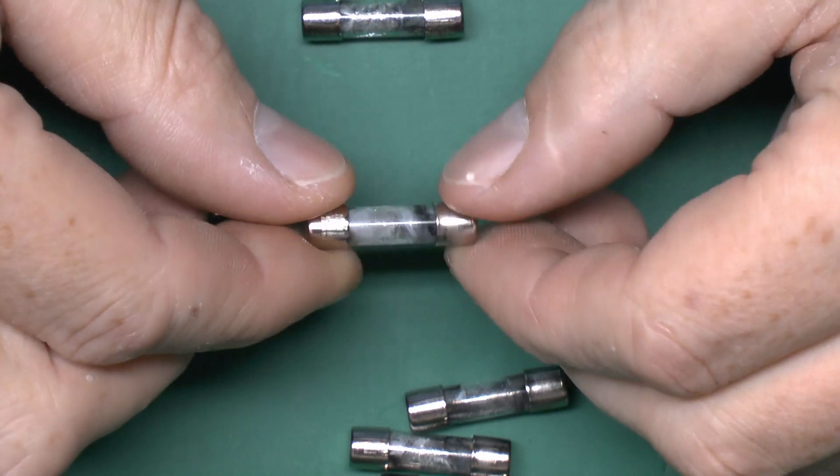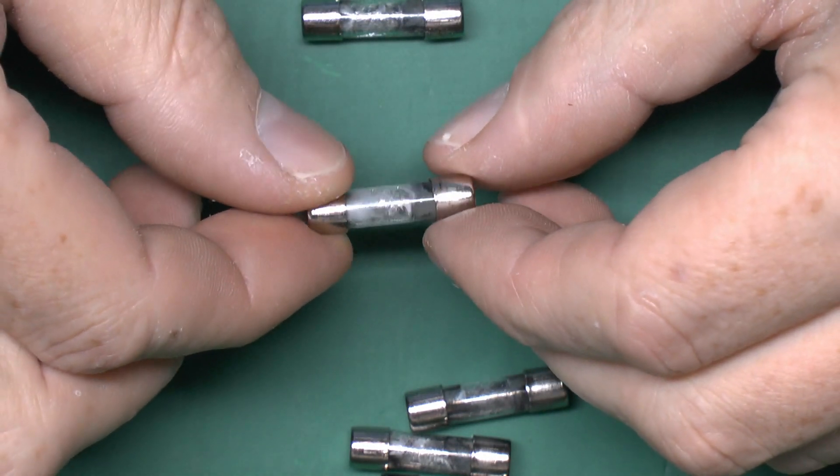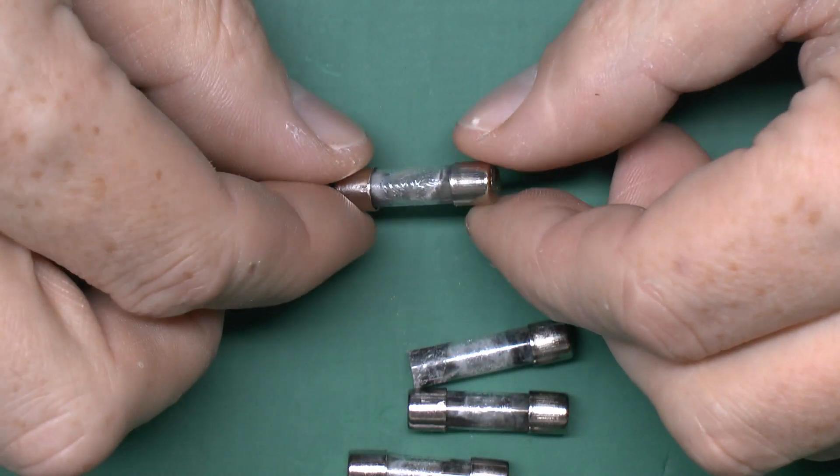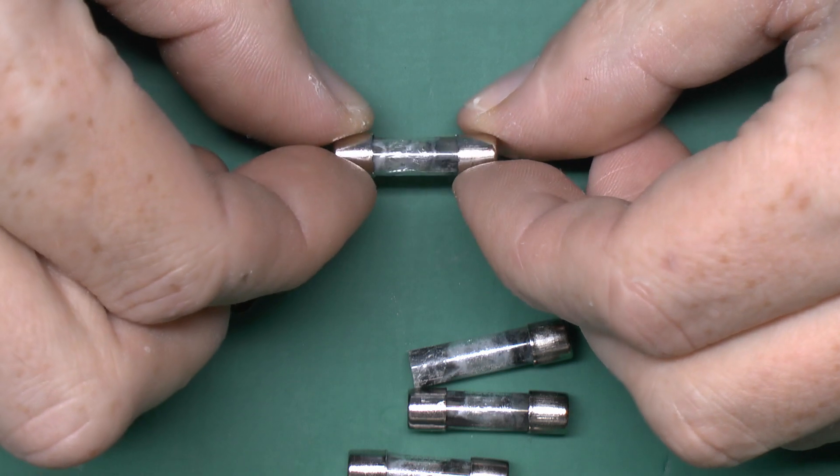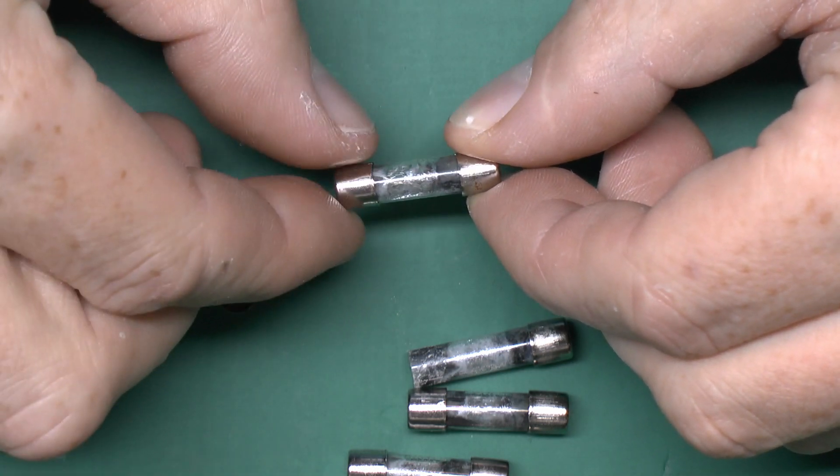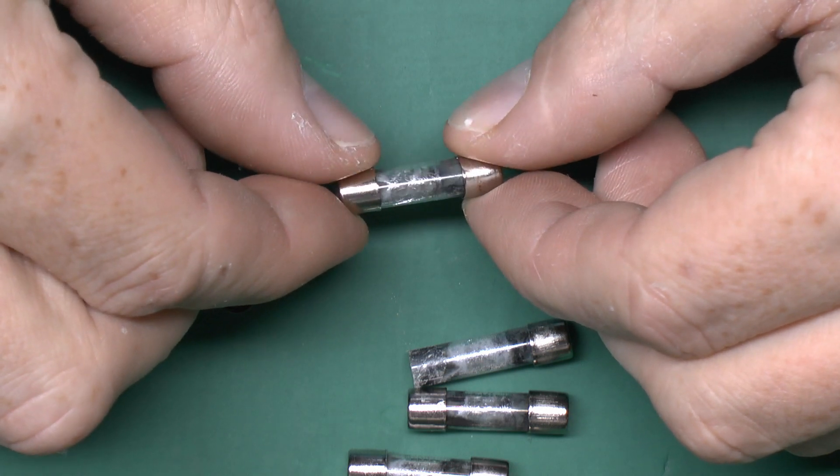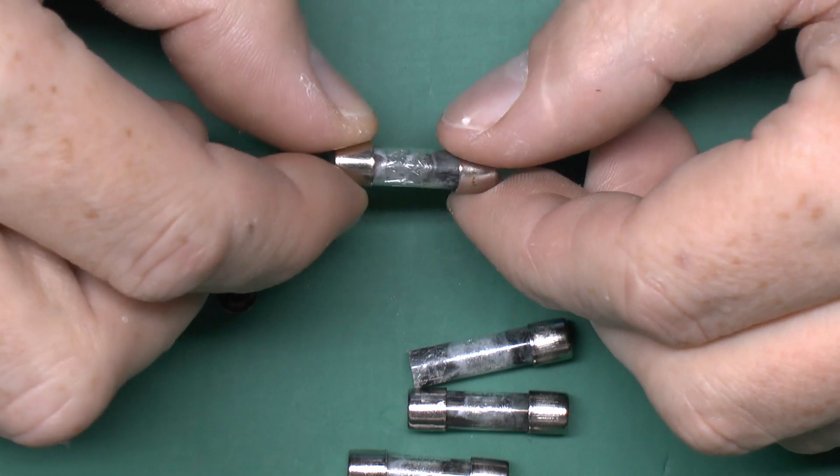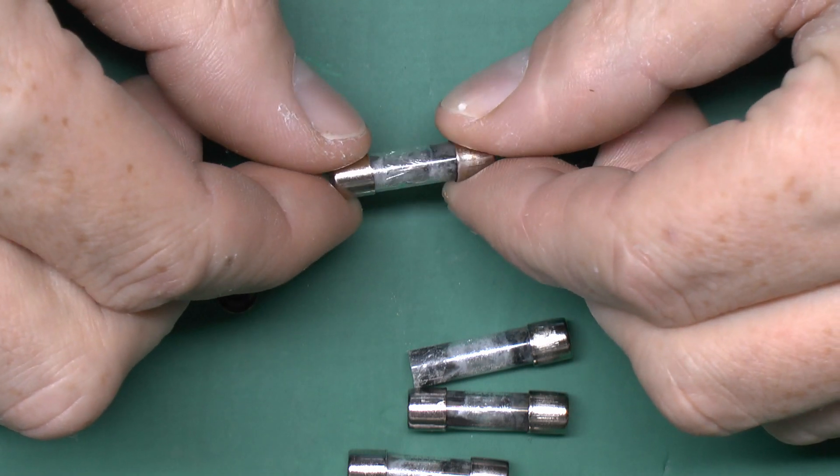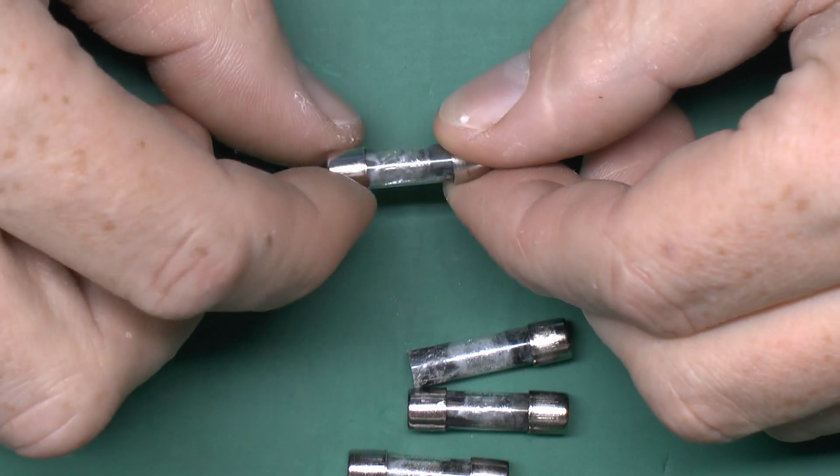And quite why that particular end came off is not clear. But nevertheless that's certainly a failure. And this is one used right at the end there which is difficult to see. But it does have some actual fractures. There's one there just in the glass itself. So fairly clearly if the fault current had been a bit higher which of course it would be if you were using actual mains voltage then that would definitely have broken and crumbled to pieces.